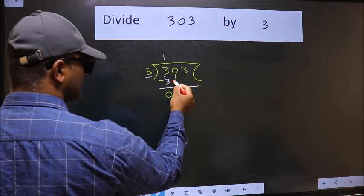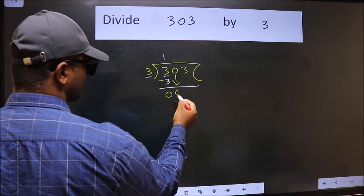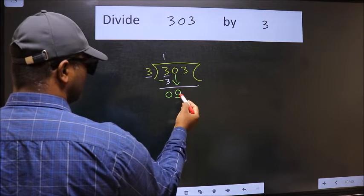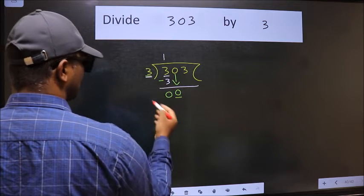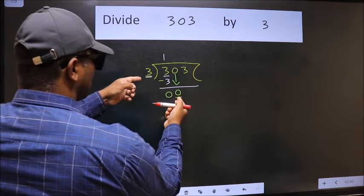After this, bring down the next number. So 0 down. Now here we have 0 and here 3. 0 is smaller than 3.